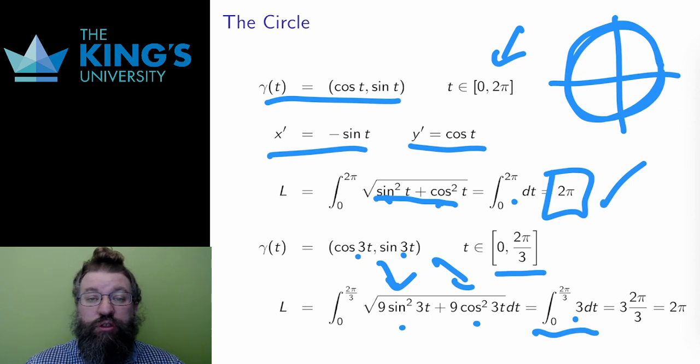Integrating 3 from 0 to 2π over 3 gives 3 times 2π over 3, which is again 2π. The alternate description again gives the circumference of the circle 2π.